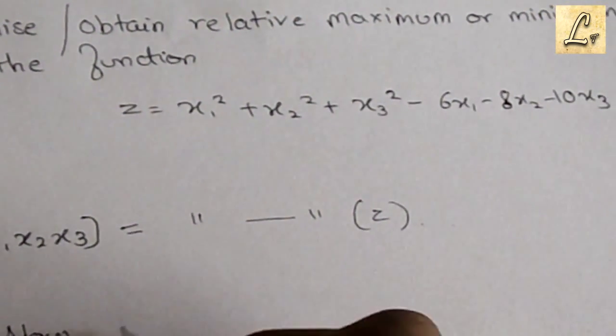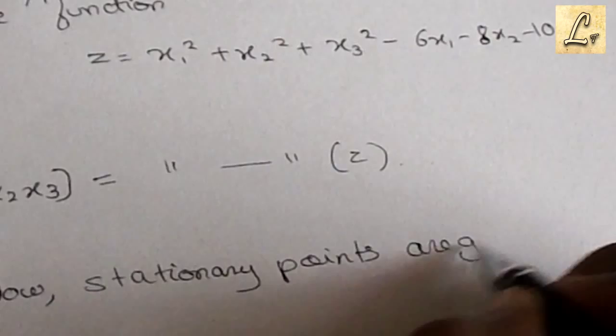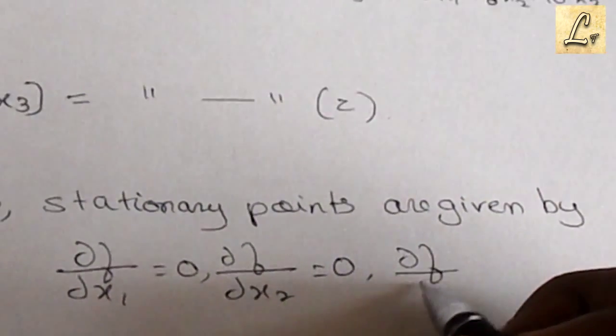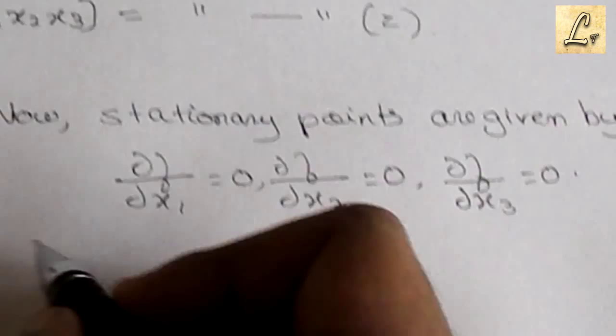Now, to find the minima or maxima, we first need to find the stationary points. The stationary points are given by the partial derivatives ∂z/∂x1, ∂z/∂x2, and ∂z/∂x3, which are all equated to zero.